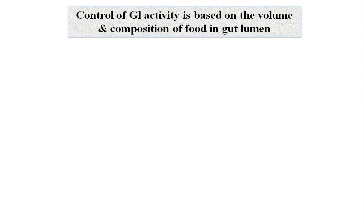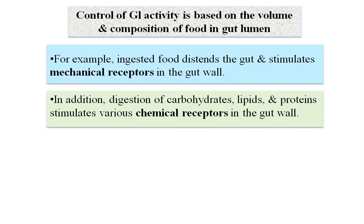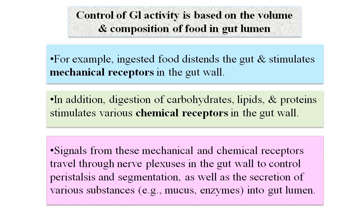Control of gastrointestinal activity is based on the volume as well as composition of food in the gut lumen. When food is ingested, the gut wall distends, stimulating mechanical receptors in the gut wall. Digestion of carbohydrates, proteins, and lipids also stimulates various chemical receptors in the gut wall. These mechanical and chemical receptors send signals to the nerve plexus, which in turn control peristalsis and segmentation, and also control secretion of various substances like mucus and enzymes into the gut lumen.